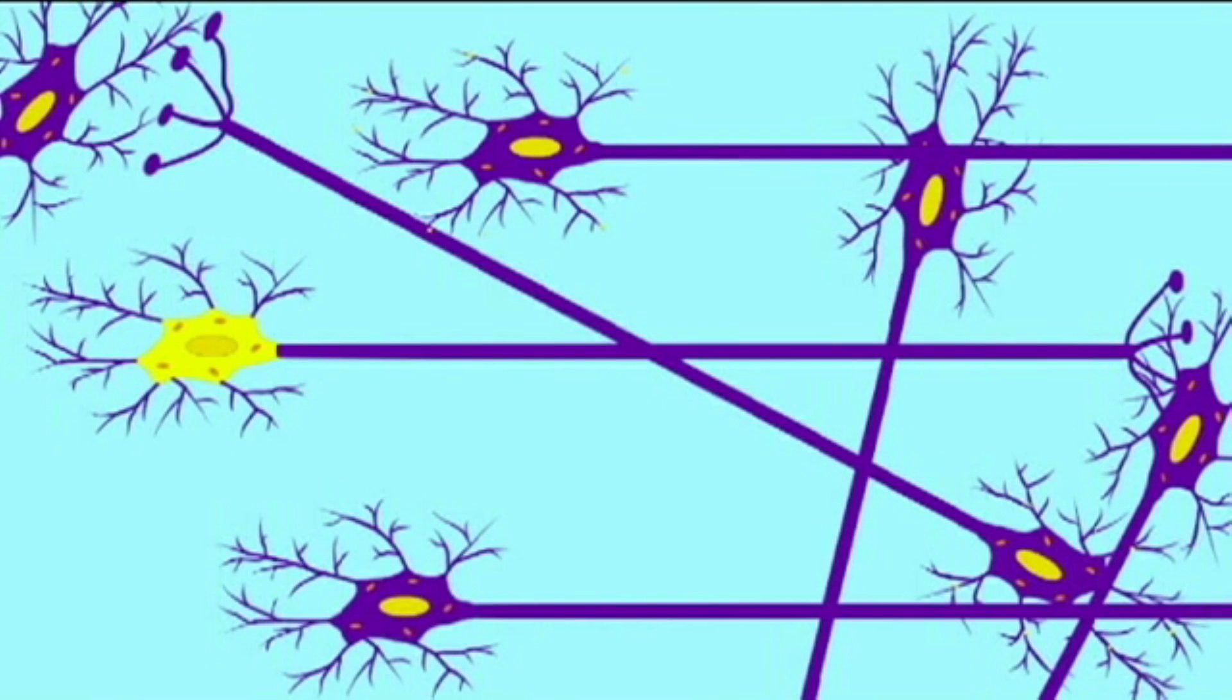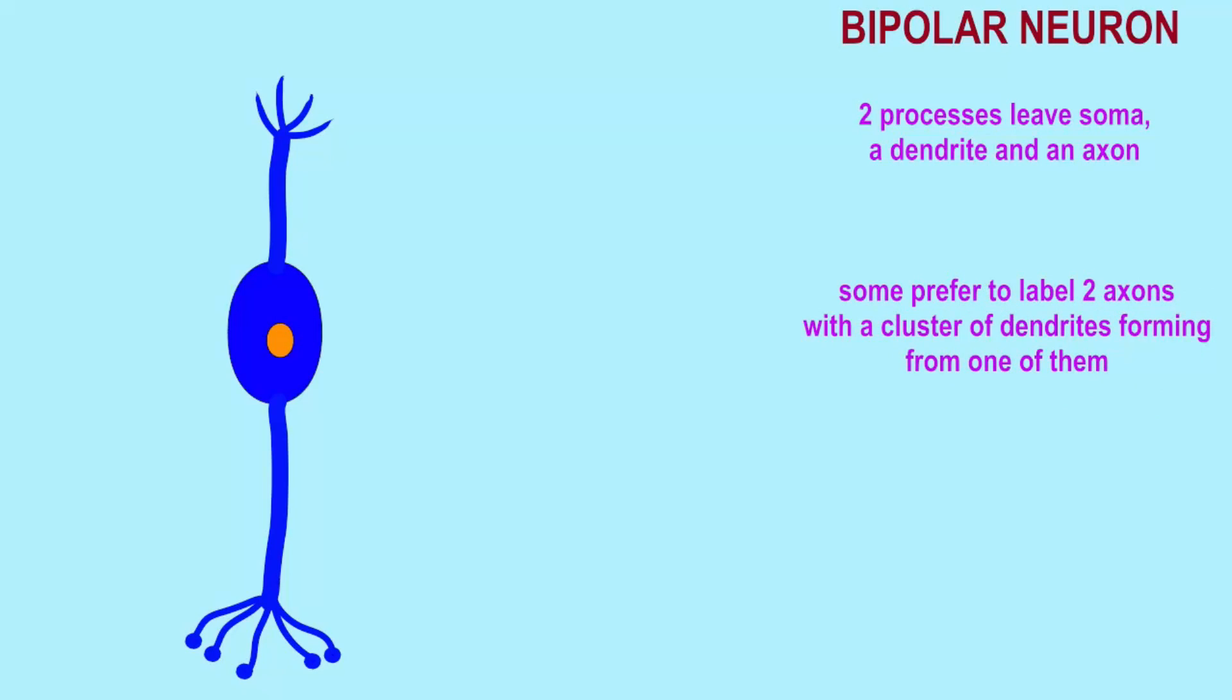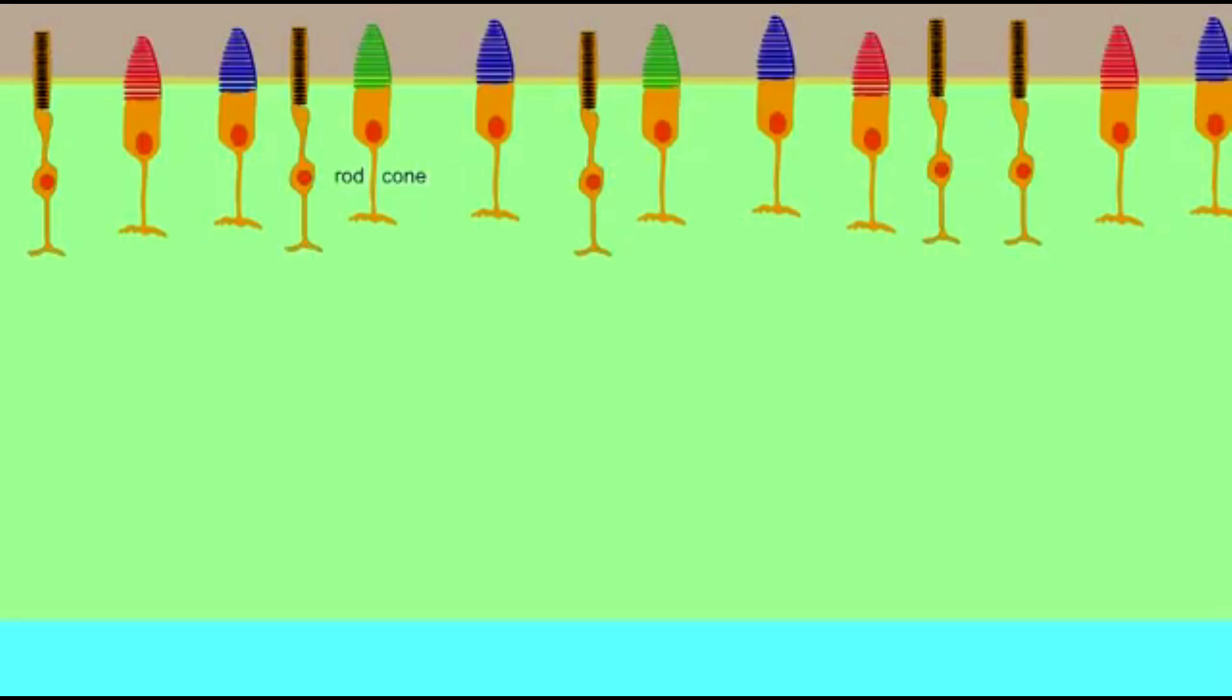some neurons are bipolar in that only two processes leave the soma. One is classified as a dendrite and the other an axon, although some authors prefer to label both extensions as the axon, with one axon having a cluster of dendrites sprouting from it. Some of these bipolar neurons are myelinated and some are unmyelinated.